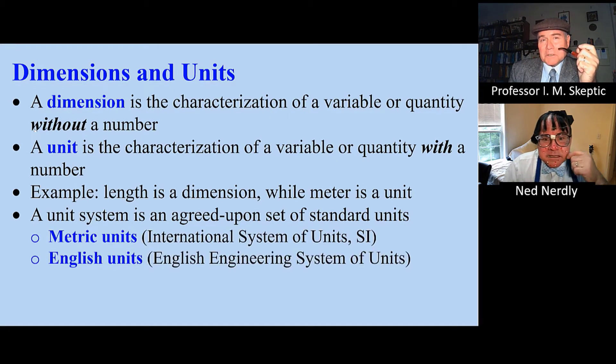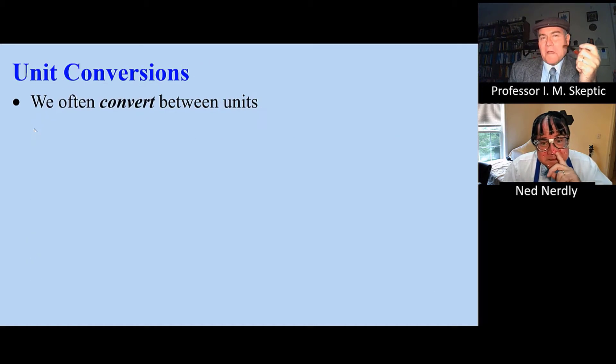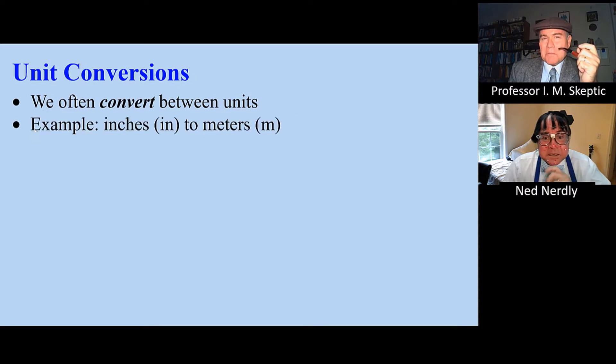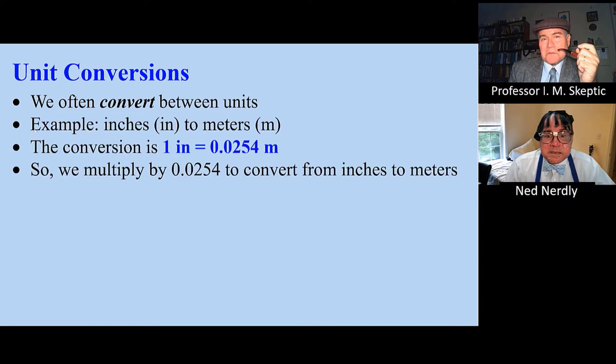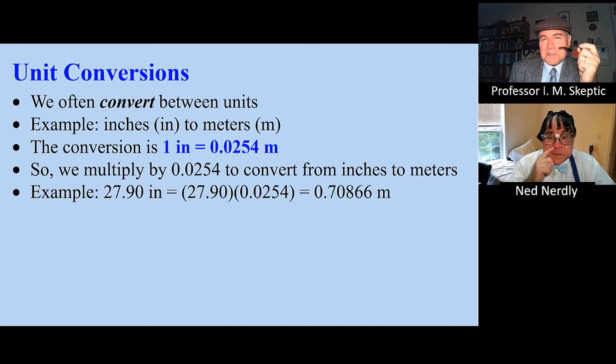Here are the three most popular ones: Metric or SI, English, and British or BG. We often need to convert between units. For example, inches to meters. Here's the conversion. You have to multiply by 0.0254. Here's a quick example.